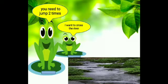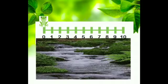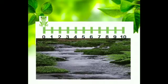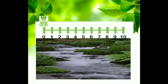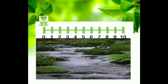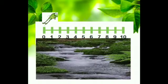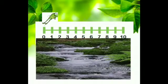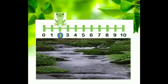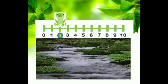Frankie said, okay Mom. Then he reached number zero. Now he remembered Mom said you need to jump two times. So he jumped two times — one, two — and he reached number two.